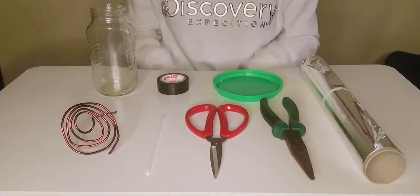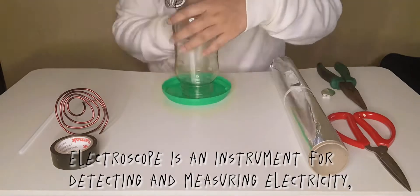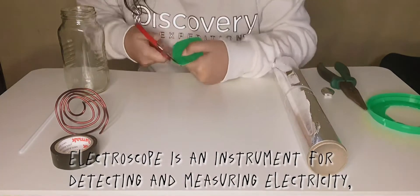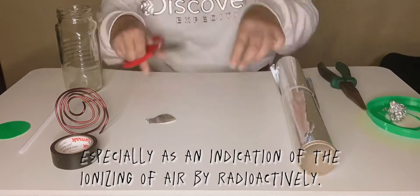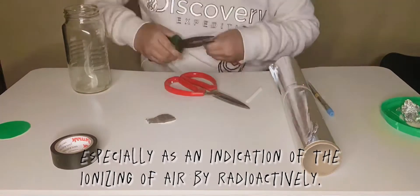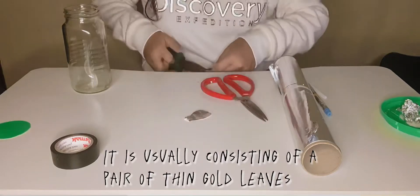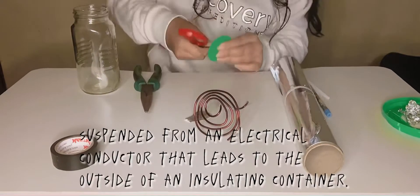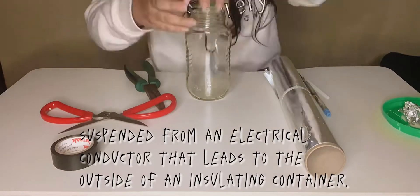So let's start assembling it. Electroscope is an instrument for detecting and measuring electricity, especially as an indication of the ionizing of air by radioactivity. It is usually consisting of a pair of thin gold leaves suspended from an electrical conductor that leads to the outside of an insulating container.